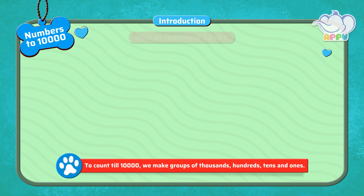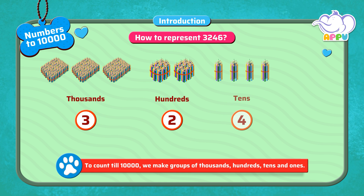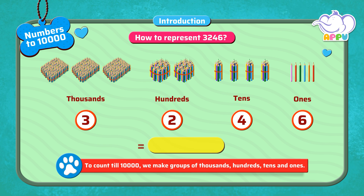How to represent 3,246. For this, we have three groups of 1,000 pencils, two groups of hundreds, four groups of tens, and six pencils. We have three thousands, two hundreds, four tens, and six ones.